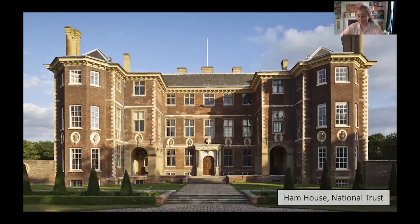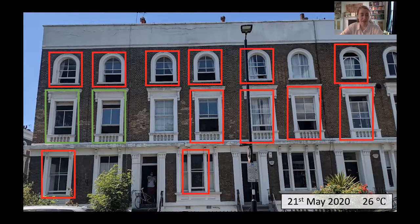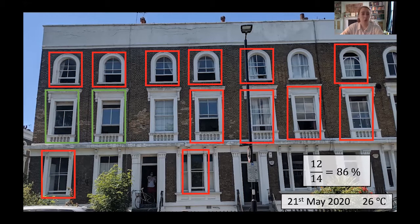Here's my data: a photograph I took on the 21st of May during my daily allowed exercise. It was 26 degrees — quite warm. This is a row of buildings all of which have sash windows, and those outlined in red are using their sash windows wrong. By the end of this talk, you'll understand what I mean, and you can have that smug feeling whenever you see a sash window being used wrong in the future. I count 14 windows here and 12 of them are being used incorrectly — that's 86% of people.